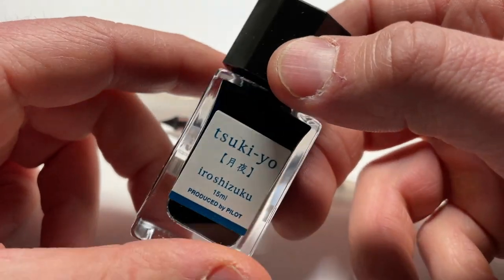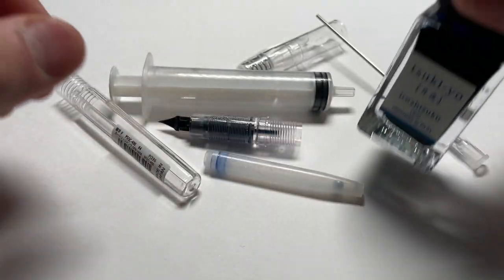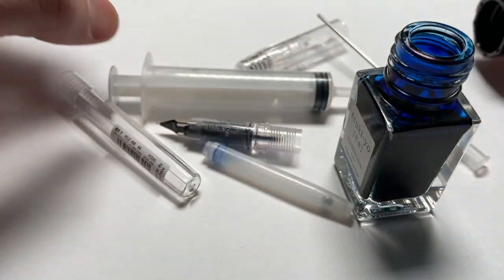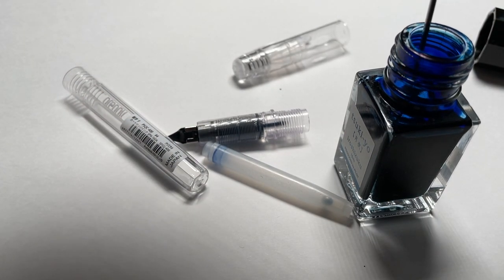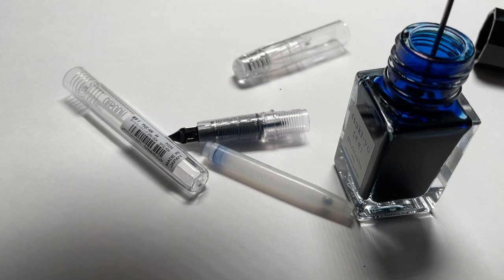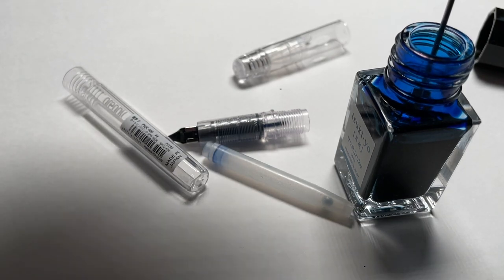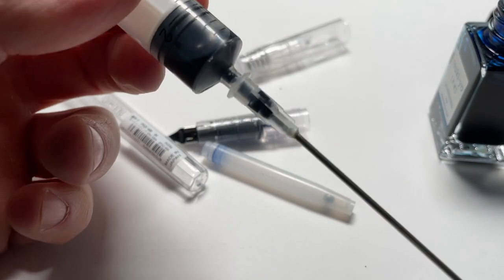Here we have some ink. Again, this is some Pilot ink. You want to give it a shake or whatever, but it doesn't really matter what ink you get. All you want to do is open it up, pull in a very little bit. Again, you can use the indicator on the side, but a cartridge is only going to be about a half a milliliter. So don't fill this thing up with ink too much. You really just need a drop or two.